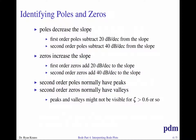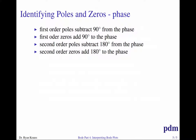Second order poles and zeros generally have peaks and valleys respectively, but only for low damping. Just because you don't see a peak or valley doesn't mean you can rule out second order — you should check the phase, because there's a lot of information there. An overdamped second order system might not have a peak but will still have a 180-degree phase shift. First order poles subtract 90 degrees in phase; first order zeros add 90 degrees. Second order poles subtract 180 degrees; second order zeros add 180 degrees.